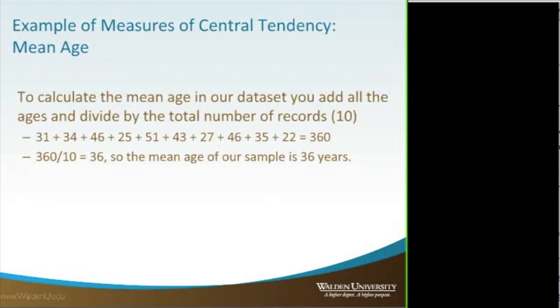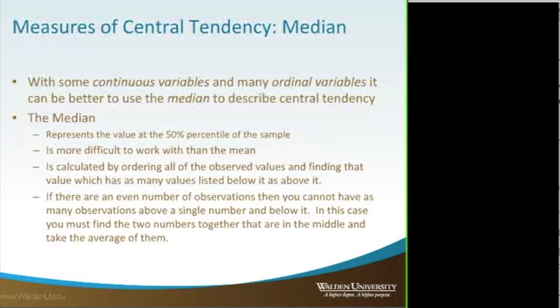Starting with basics: most of you know what an average or a mean is. Basically, you take all of the values, add them all up, and divide by the number. In this example, there are ten numbers. They add up to 360, so we divide by ten and get an average of 36.